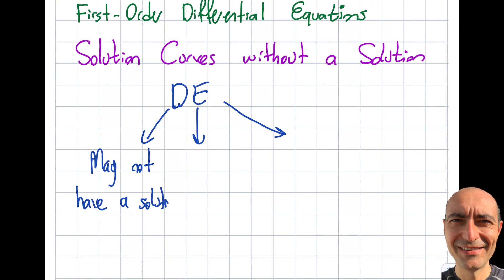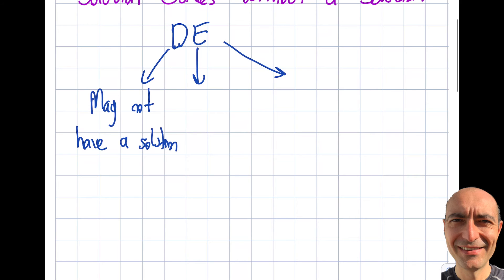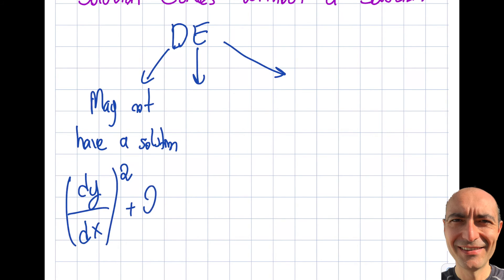I discussed this in the first module as well. I may write any differential equation I want for the mathematics, but what does it represent in physical terms? If it doesn't represent anything physical that exists in real life, then there may not be a solution. For instance, even a simple equation like dy/dx squared plus two equals zero doesn't have a solution. This is a first order — the square of the first order doesn't make it second order. I may also have an actual analytical solution.